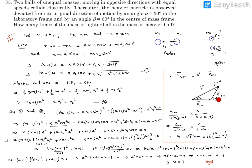From the triangle, the angle between vcm and the relative velocity side is (beta − alpha) = 60° − 30° = 30°, and the angle opposite to v1 is (180° − beta) = 120°. Applying the sine rule: vcm/sin(beta − alpha) = v1/sin(180° − beta). So vcm/sin(30°) = v1/sin(60°), giving v1 = (sin60°/sin30°)*vcm = √3 * vcm.